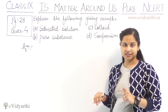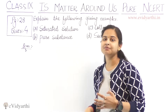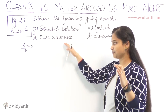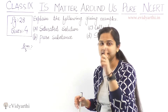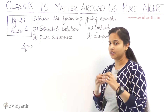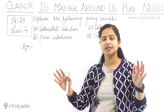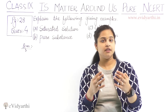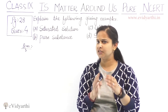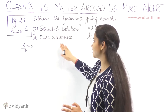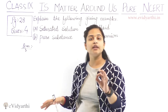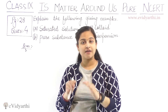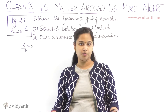Let's go to part B — pure substance. A pure substance is a substance consisting of only one single type of particle. That is, all constituent particles have similar or same chemical properties.